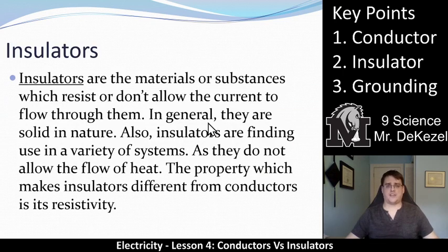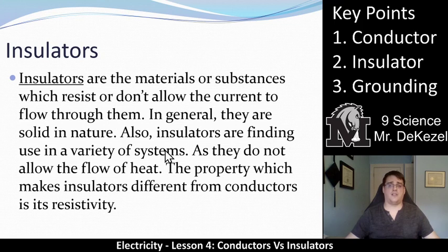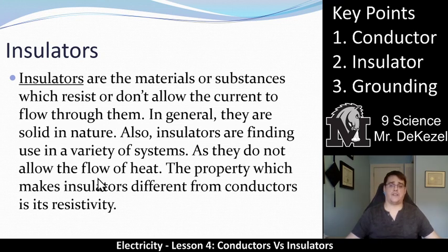Insulators are the materials or substances which resist or do not allow the current to flow through them — they do not allow electrons to move. They are generally solids in nature. Insulators are very, very useful in a variety of systems like electrical systems, to prevent charges going to places we don't want them to. That's why we wrap wires in rubber — we want the charges to go only down the wire and nowhere else. Insulators often do not allow the flow of heat or light either, making them very different from conductors. They essentially resist all energy moving through them.